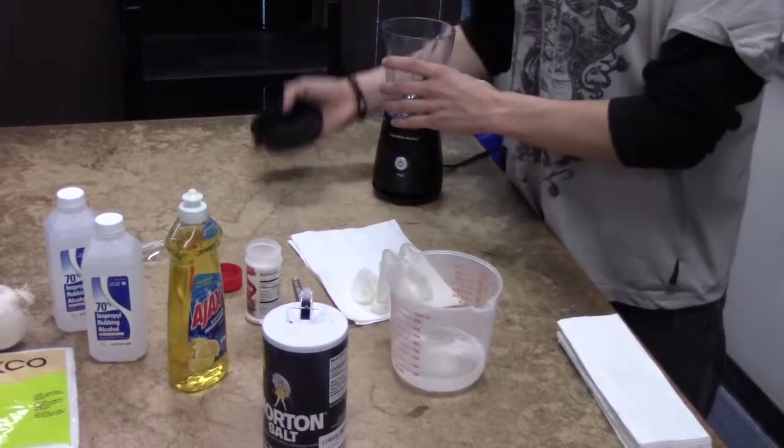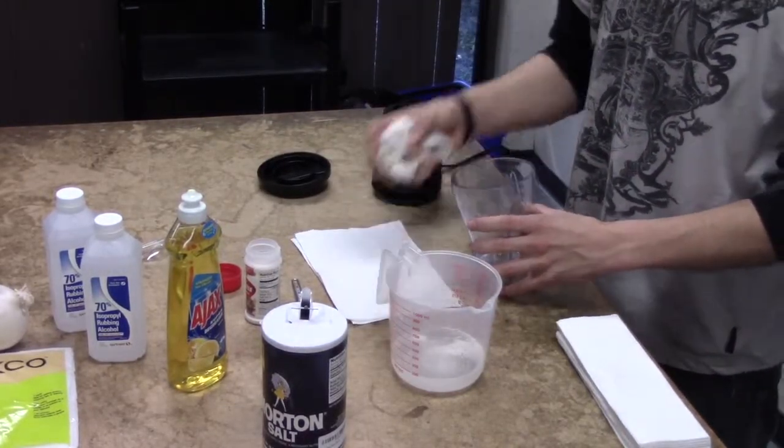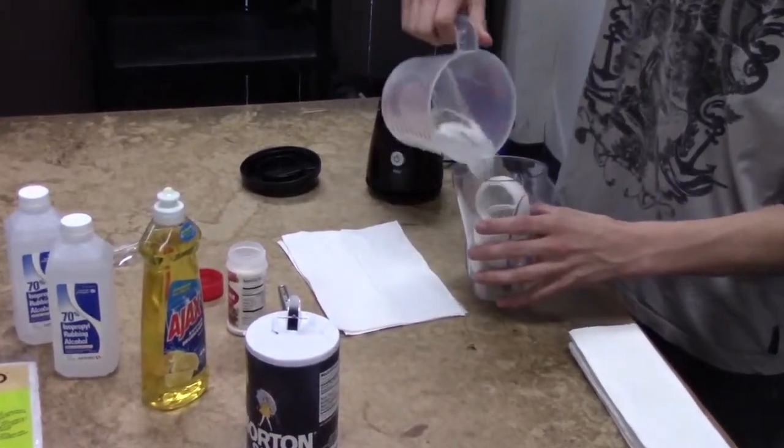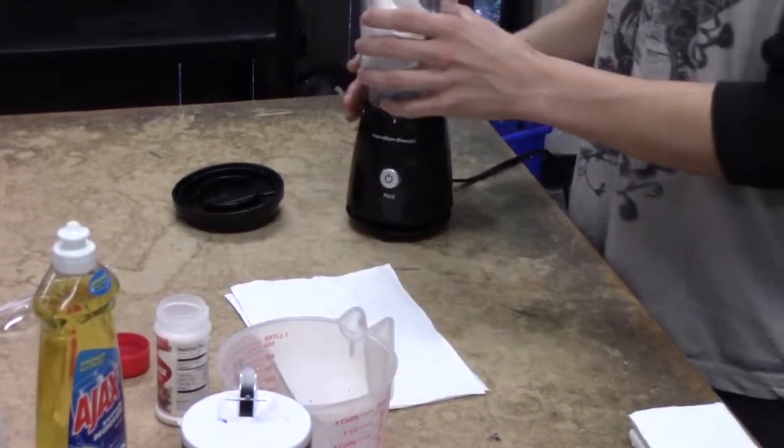Next, we're going to add the solution we just created to our onion and then blend them together until we have a good amount of onion pulp. First, the onions, followed by the solution. And then we're going to blend it for about 15 pulses.